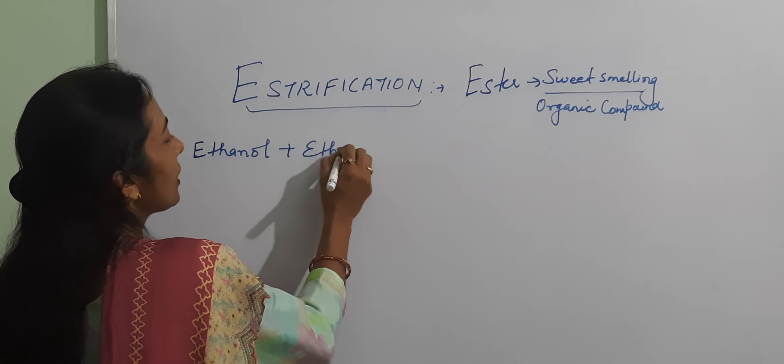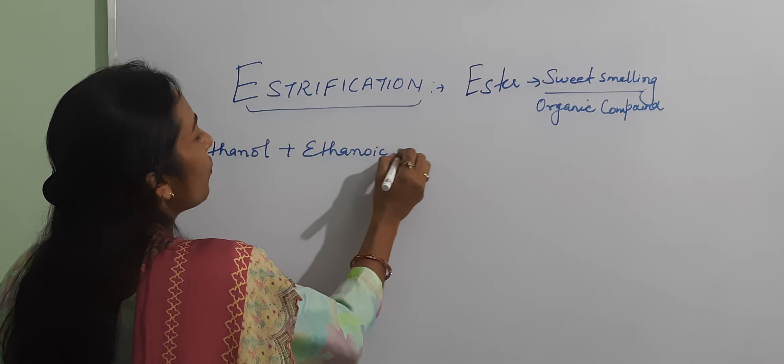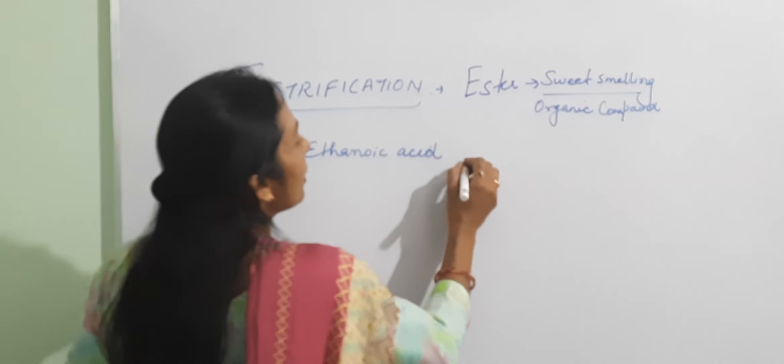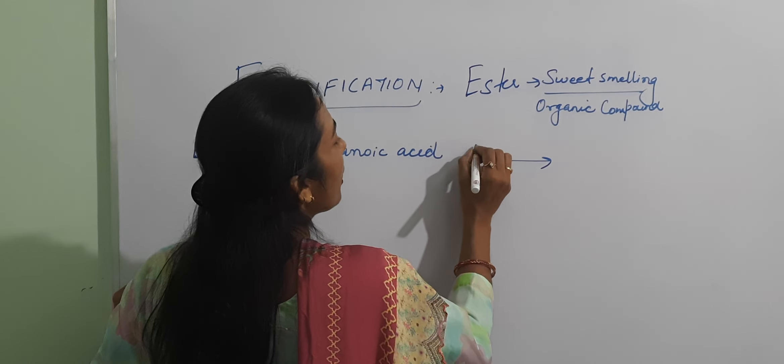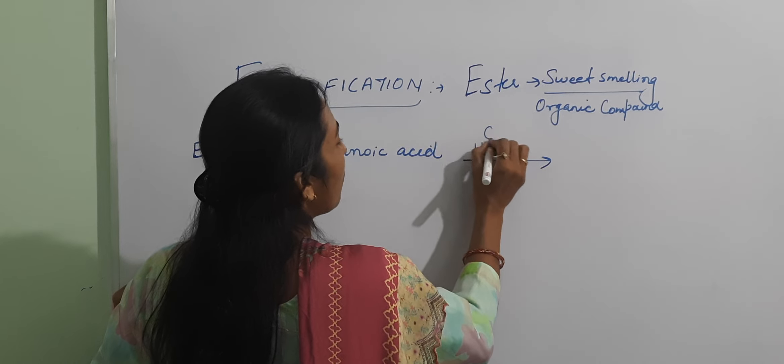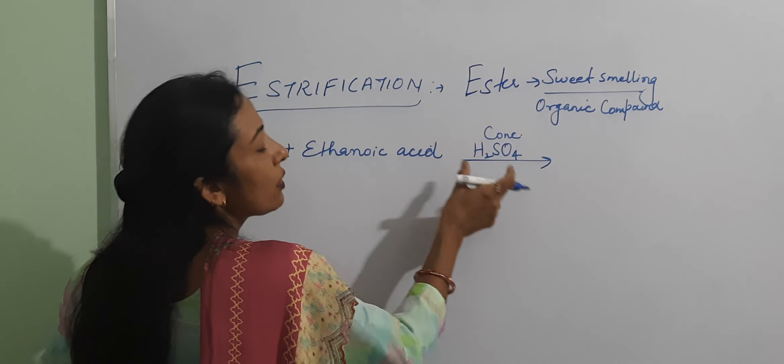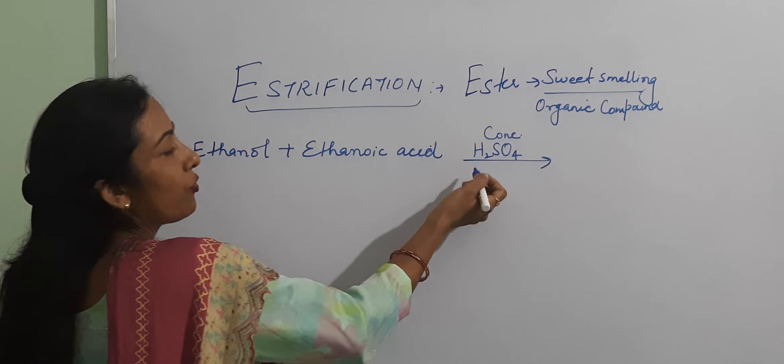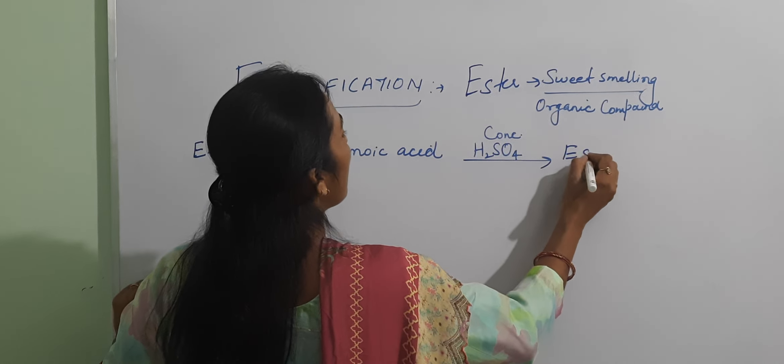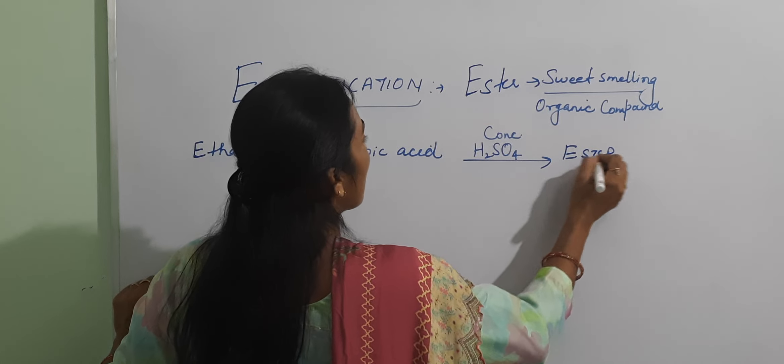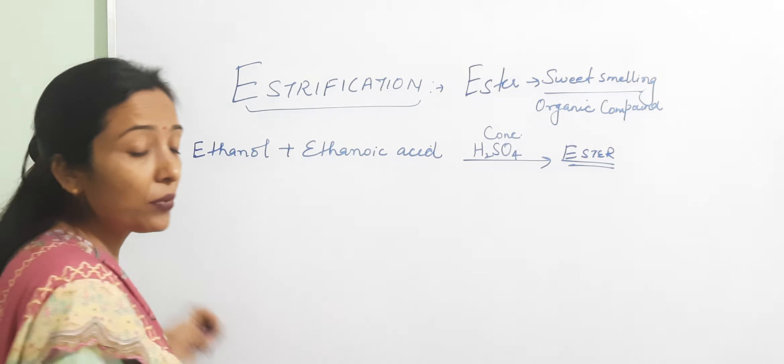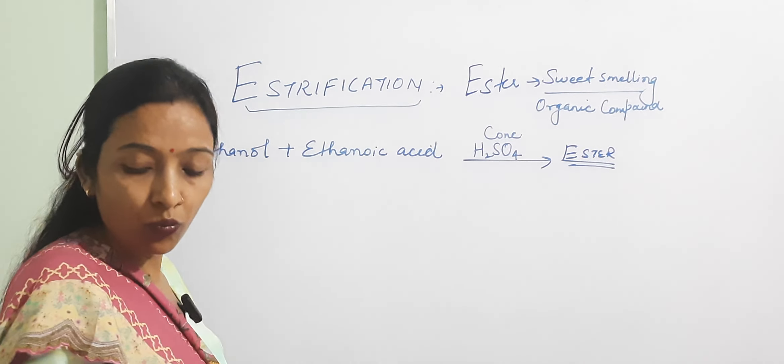Ethanol and ethanoic acid. How is ester made? It is with thick, concentrated sulfuric acid. The reaction will give us the product ester. So I will write this word equation which we will write in class, chapter number 1.